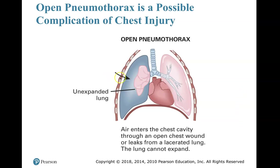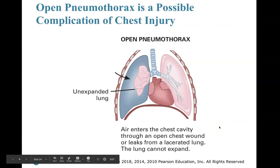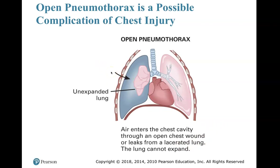An open pneumothorax is a possible complication of chest injury — air enters through the sucking chest wound and collapses the lung, filling that pleural space with air and putting pressure on the lung. As air enters the chest cavity through an open chest wound or leaks from a lacerated lung, the lung cannot expand. A pneumothorax can also result from the paper-bag effect where the lung itself ruptures and air fills the pleural space on breathing in — it can be from both, not just an open chest wound.